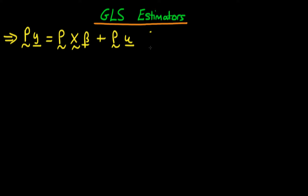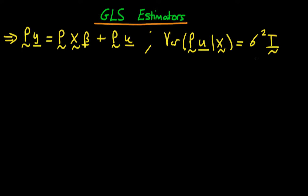The idea is that if we look at our transformed error — P times U — we require that the transformed error PU given X should be homoscedastic. In other words, it should equal sigma squared times the identity matrix I. In requiring this, we came up with an expression: I equals P times omega, our variance-covariance matrix, times the transpose of P. We're going to use this expression to derive the explicit form of the transformation matrix P.